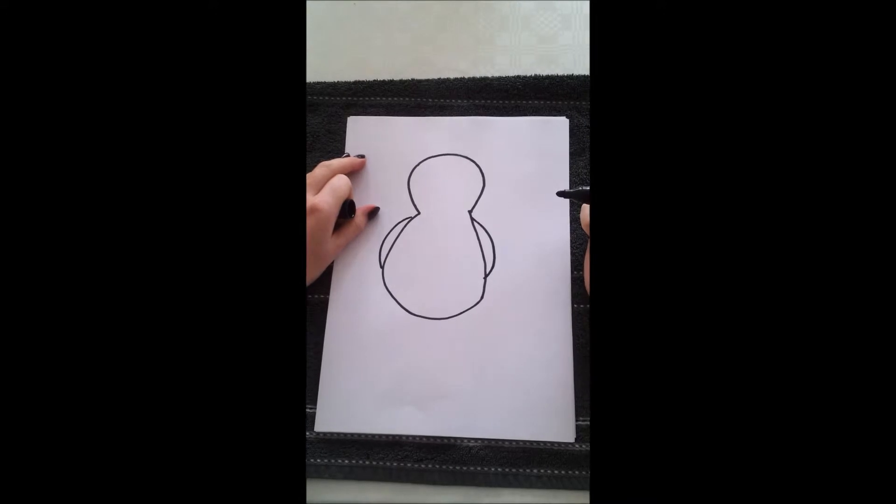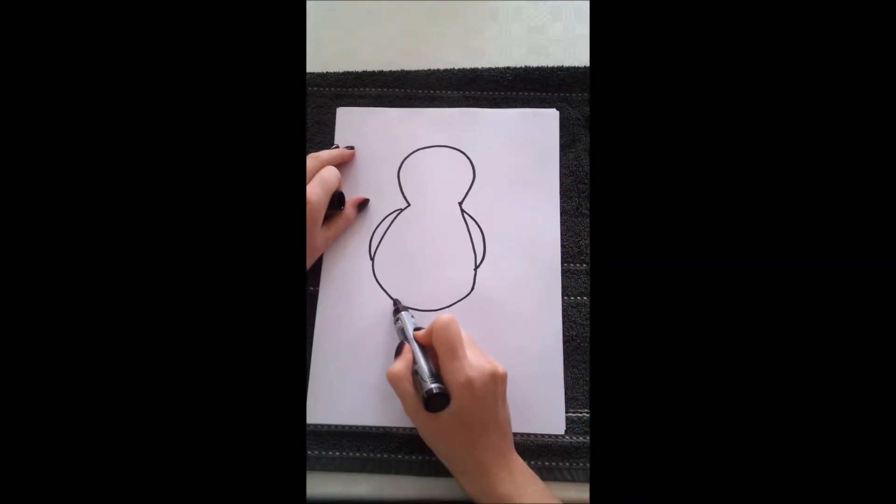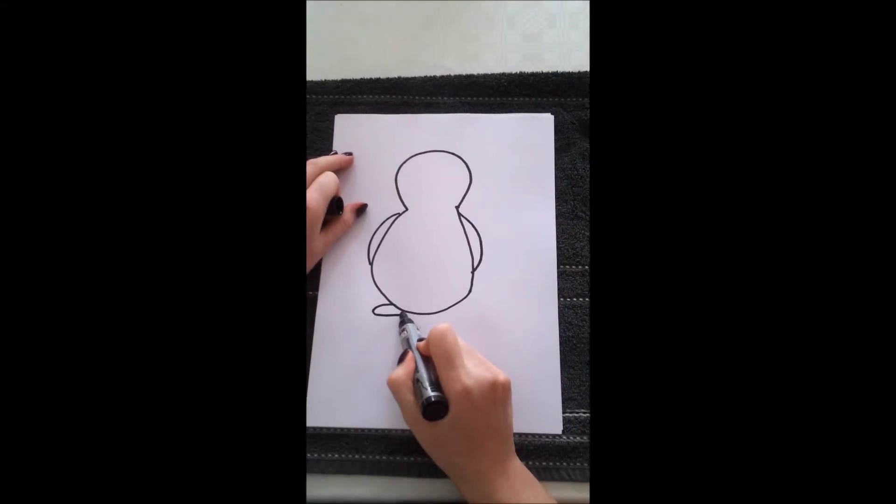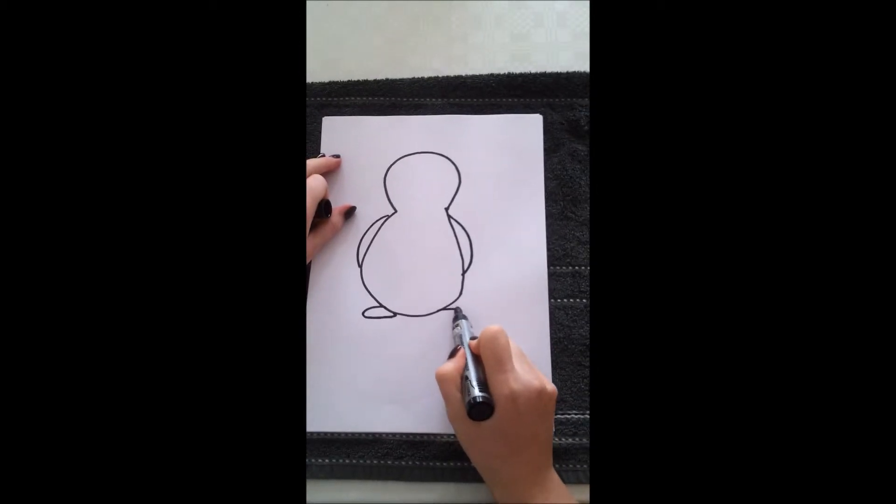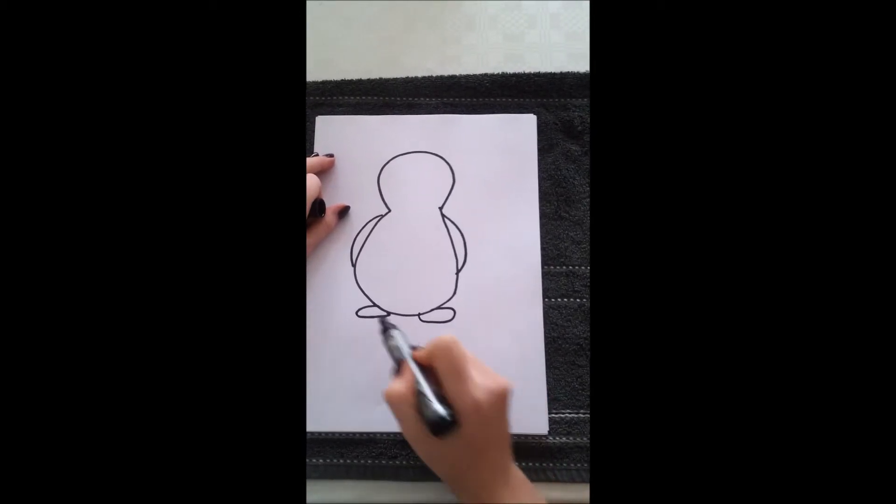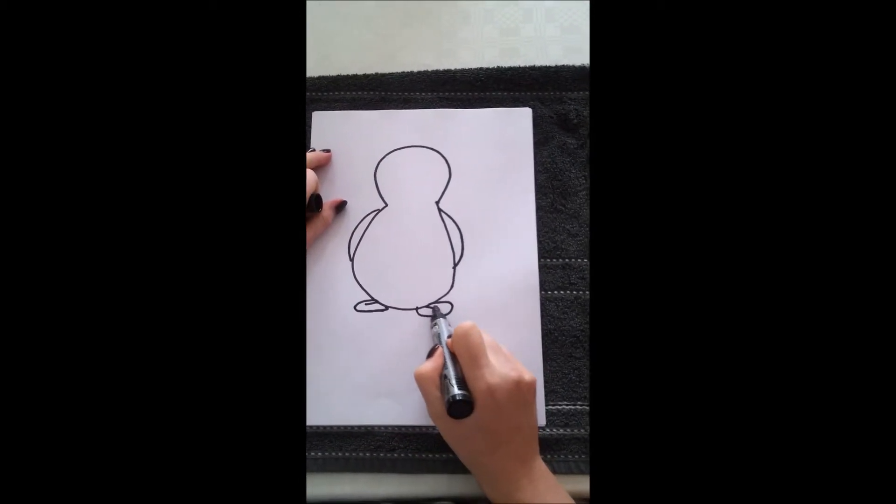Now, for the feet, we're going to do a squashed circle shape. Something like this. Add some lines as well.